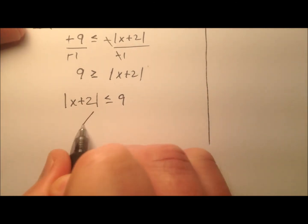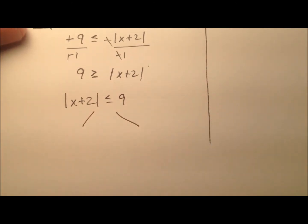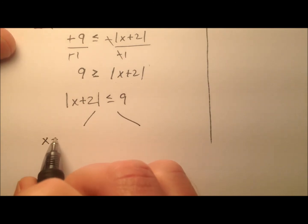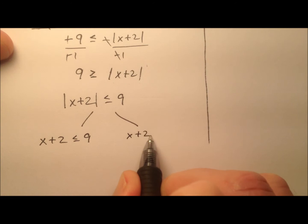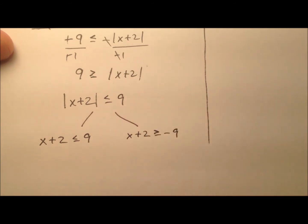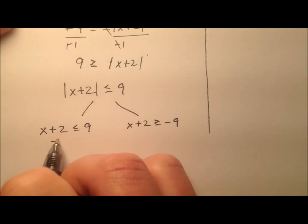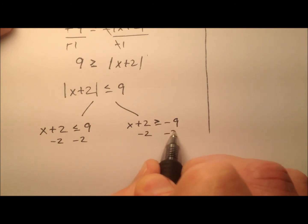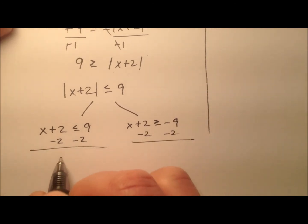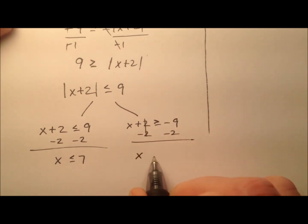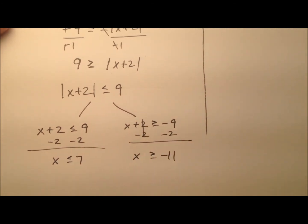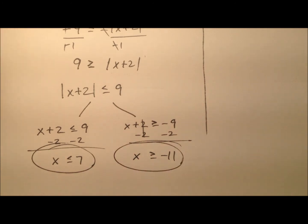So now we have this. Let's break it up into two pieces. So x plus two is less than or equal to nine, or x plus two is greater than or equal to negative nine. When we subtract two from both parts, x is less than or equal to seven, and x is greater than or equal to negative 11. I'm going to circle those and hold on to them for a moment.